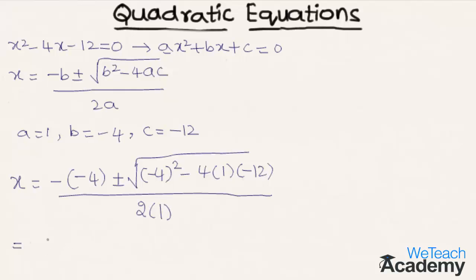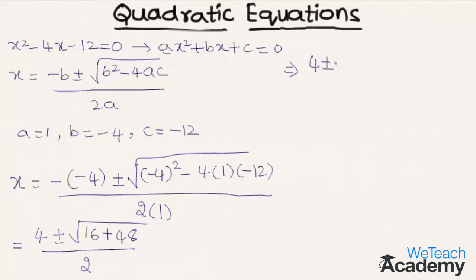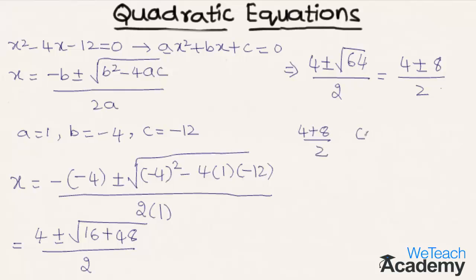Simplifying: −(−4) = +4. Under the square root: (−4)² = 16, and −4 × 1 × (−12) = +48, so 16 + 48 = 64. The denominator is 2 × 1 = 2. Since 64 is a perfect square, its square root is 8. So we get x = (4 ± 8) / 2.